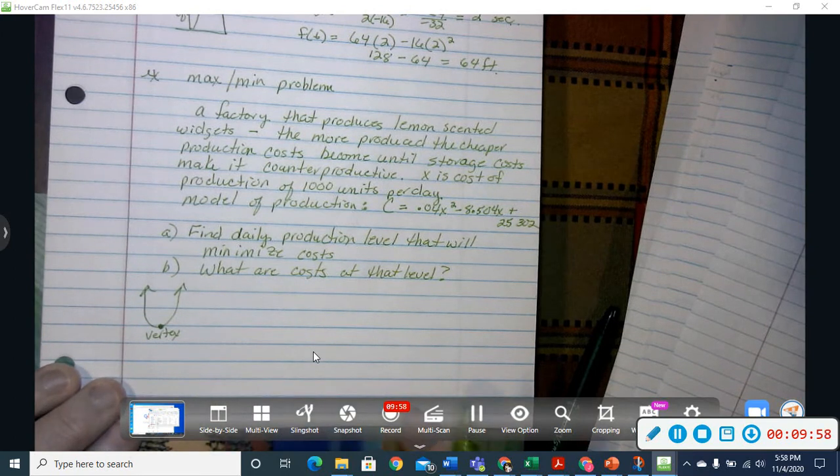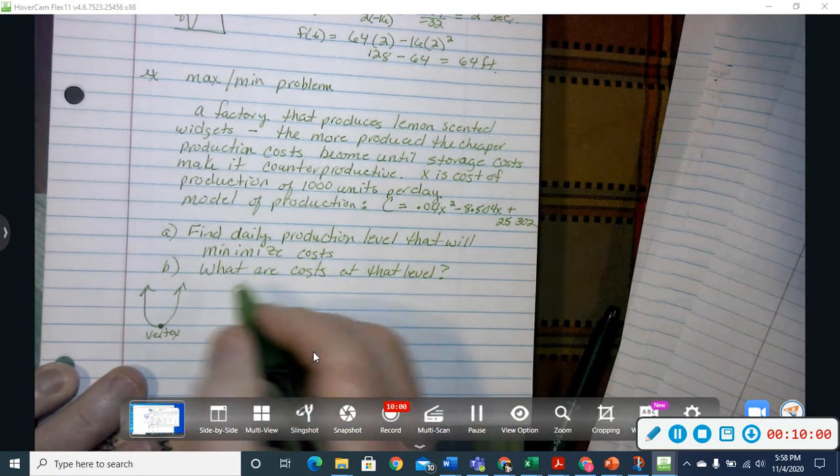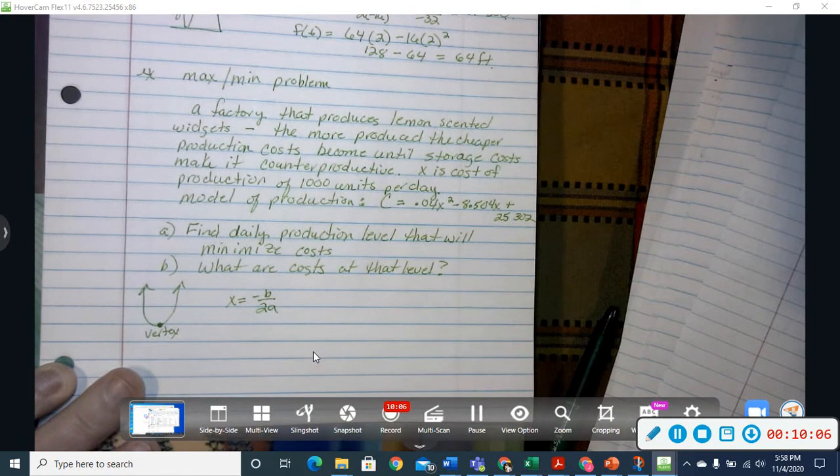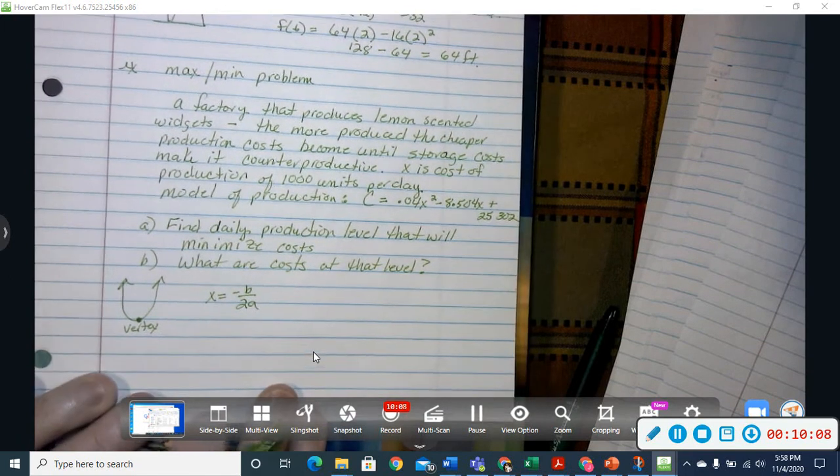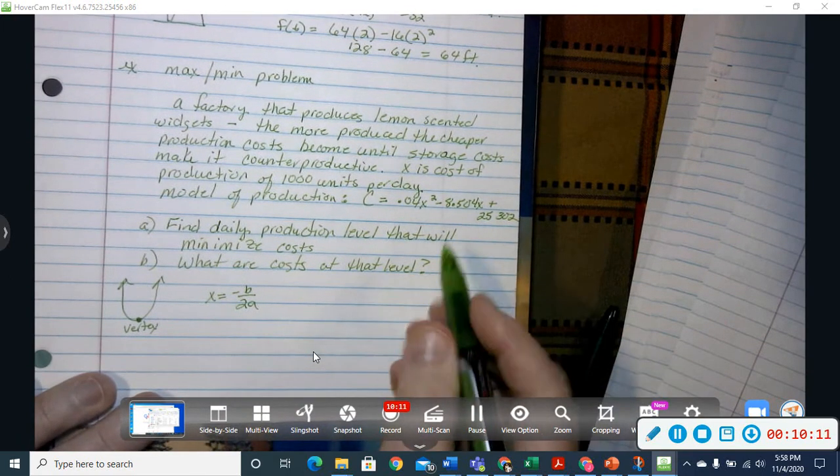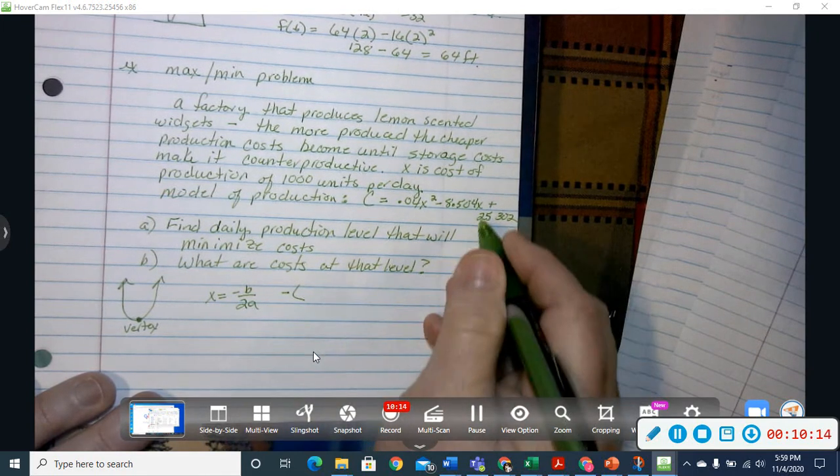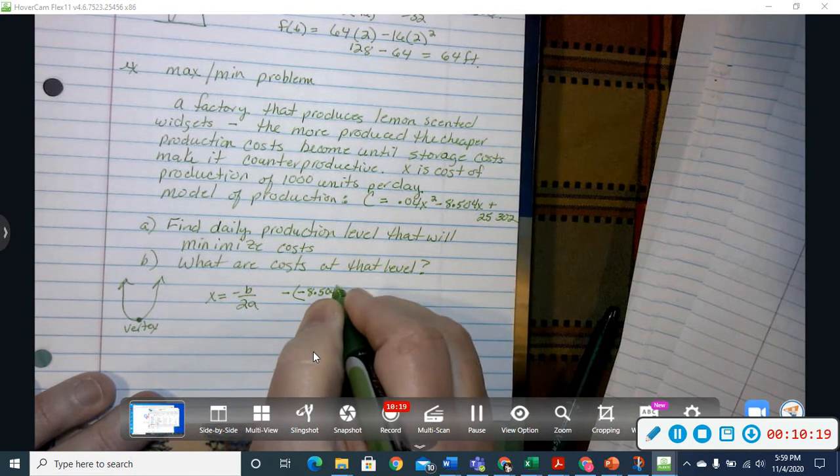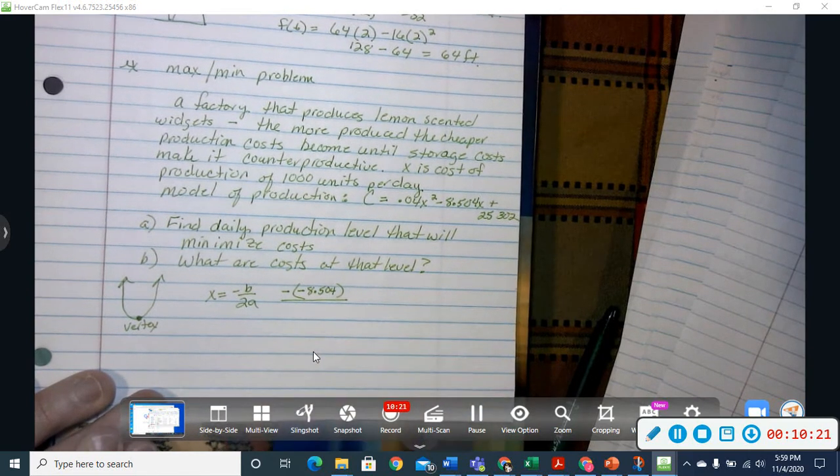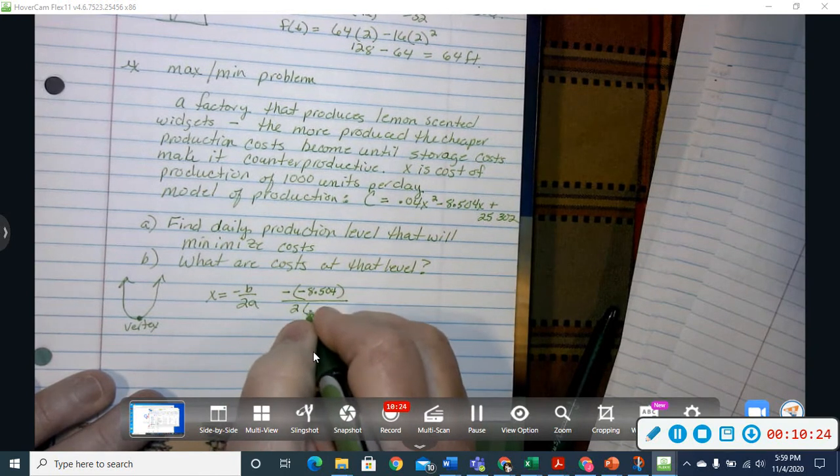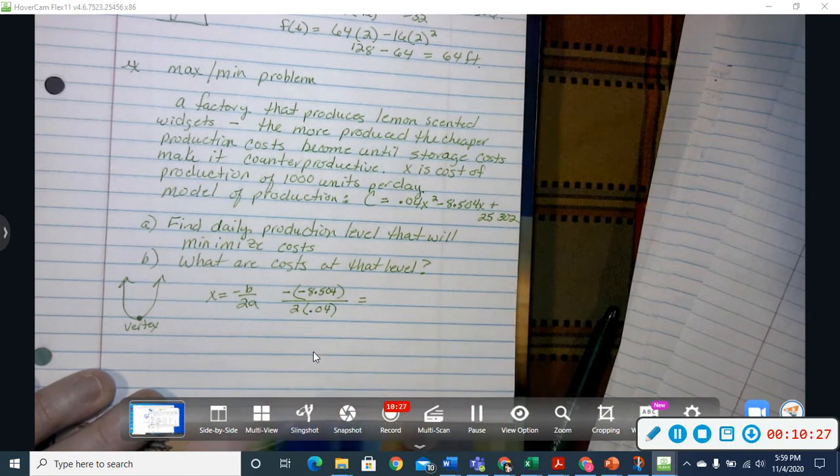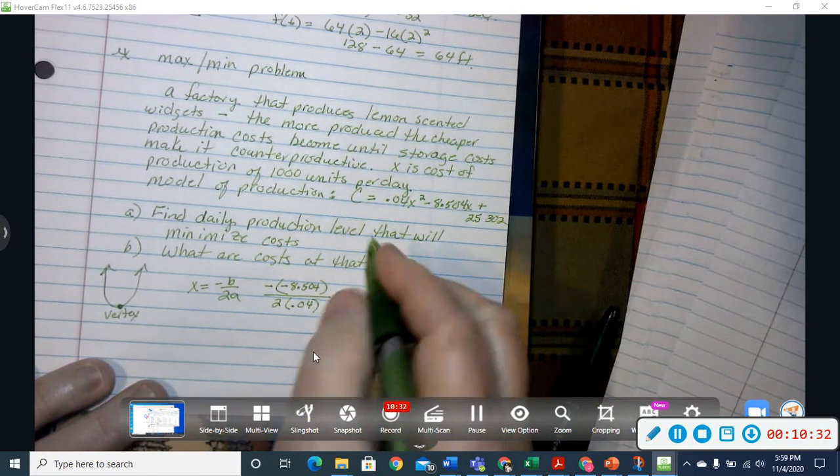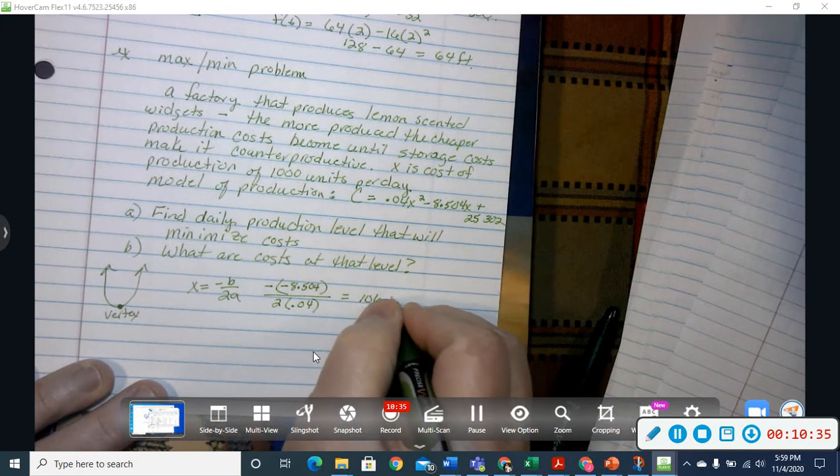So, if we're still trying to find the vertex, we're still using x equals negative b over 2a in order to find that vertex. So, using our model there, we would have the opposite of b, so negative 8.504 over 2 times a, which is .04, and we work all of that out, and we get 106.3.